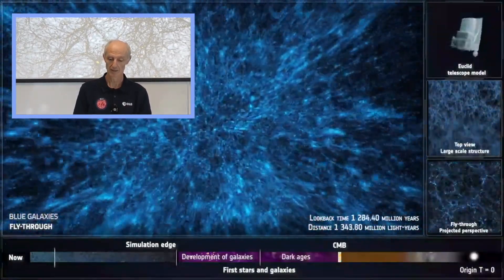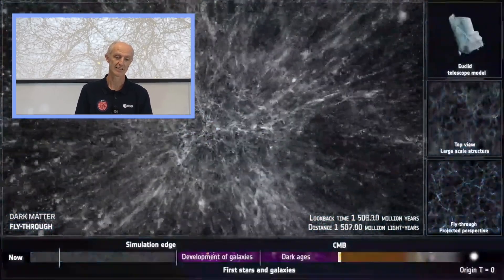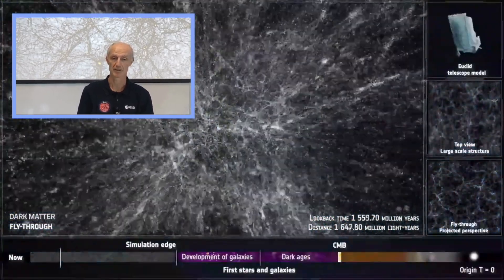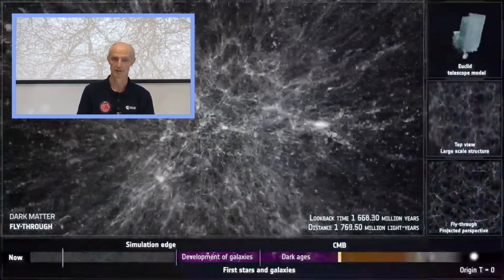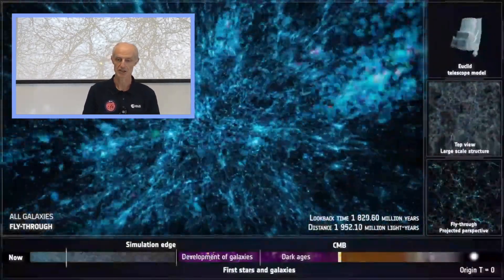From the halo catalog, we have placed galaxies, assigning all the properties that Euclid is going to observe. We assign luminosities, positions, velocities, emission lines, stellar masses, and all the lensing properties that are going to be observed by Euclid. This catalog constitutes one of the largest that have ever been produced.